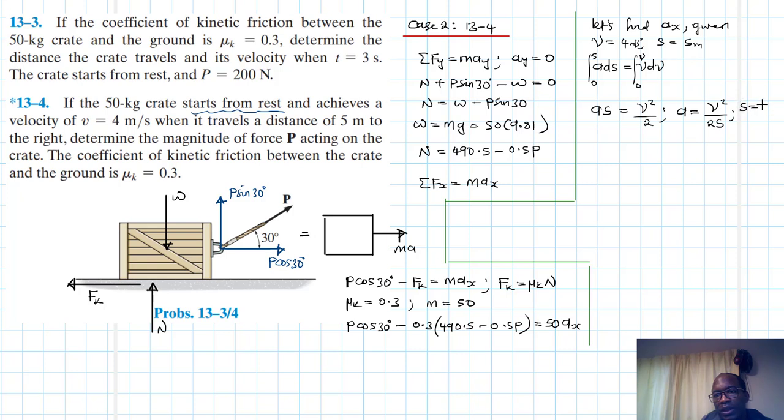And our S we said is equal to 5 and our V is equal to 4. So we can plug in those values in there. We have 4 squared divided by 2 times 5.